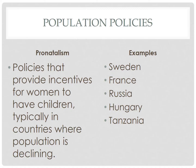Shifting gears to the other type of population policy, we are now going to look at pronatalist policies, which are policies that provide incentives for women to have children, typically in countries where population is declining. These policies are sometimes called expansive policies because they are trying to expand the population. These policies are intended to boost fertility rates, thereby accelerating population growth, which is why we tend to see them in countries experiencing natural decrease or a negative NIR, like many European countries.